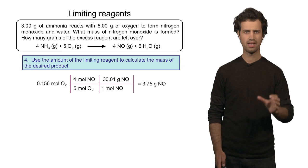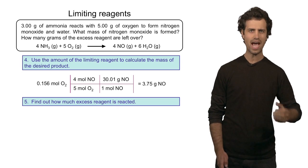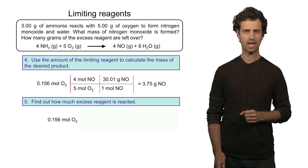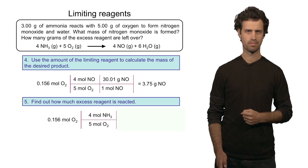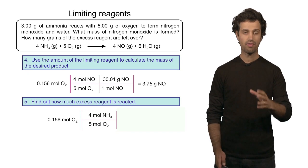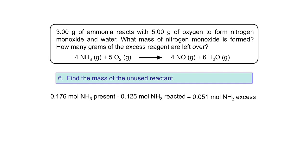We can also use the limiting reagent to calculate how much of the excess reagent is left. The first step is to calculate how much of the excess reagent has reacted. We take the amount of limiting reagent and convert that into the amount of moles of excess reagent — this will be the amount that has reacted. The mole ratio is 4 to 5, giving 0.125 moles of ammonia reacted. At the beginning I had 0.176 moles of ammonia, so that means 0.051 moles of ammonia are left after the reaction.